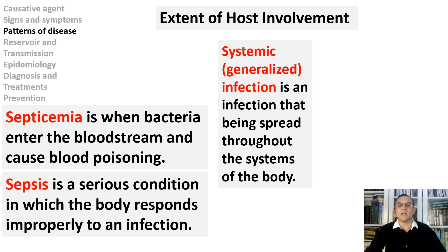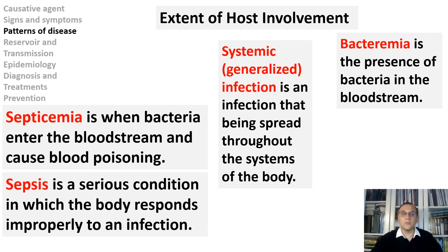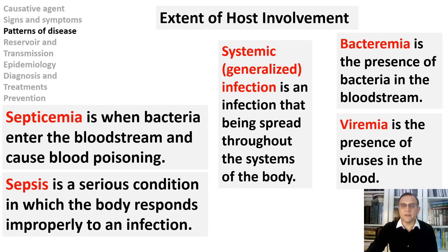Most people who develop sepsis have at least one underlying medical condition, such as chronic lung disease or a weakened immune system. Bacteremia is the presence of bacteria in the bloodstream and may result from ordinary activities such as vigorous toothbrushing, dental or medical procedures, or from infections such as pneumonia — one of the most common causes of death worldwide. Viremia is the presence of viruses in the blood; common cases include HIV infection, influenza, viral pneumonia, viral meningitis, measles, mumps, and rubella.